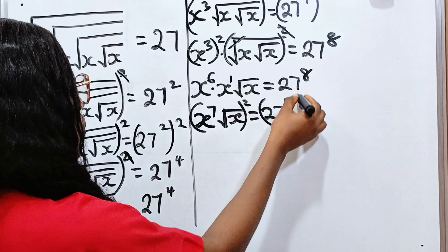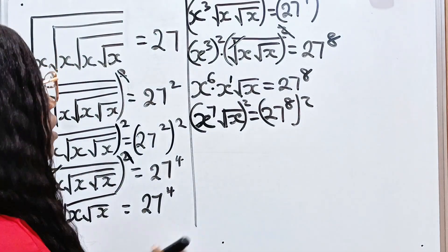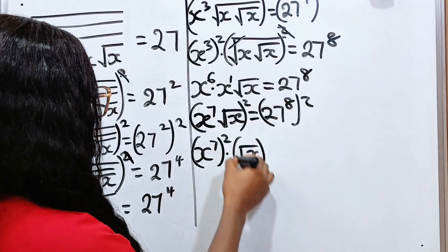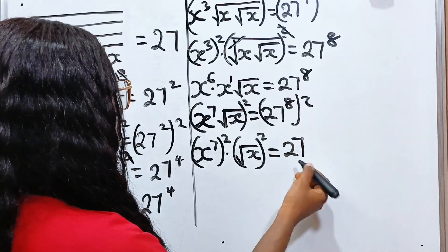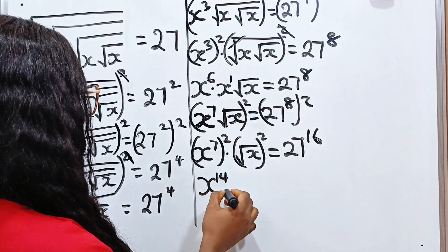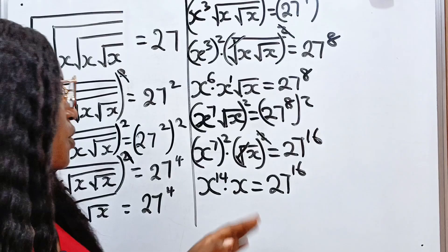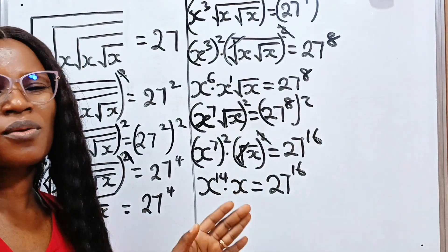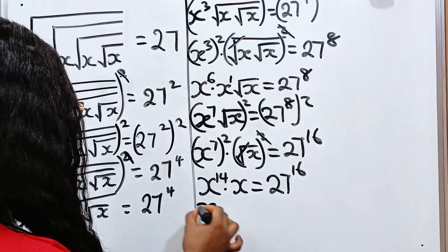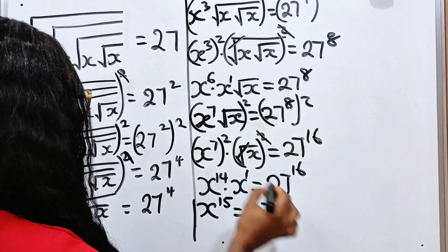Now we square again — we will continue squaring until we have no roots remaining. So x to the power of 7, all squared, multiplied by square root of x squared, equals 27 to the power of 8×2 = 16. That gives x to the power of 7×2 = 14, and the square removes the remaining root, leaving us with x to the power of 14 times x equal to 27 to the power of 16. By removing all square root signs, we can now solve this much more easily.